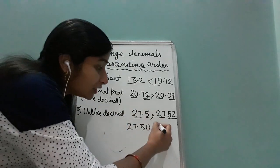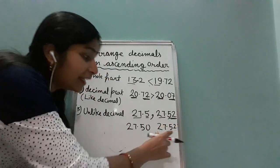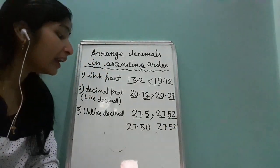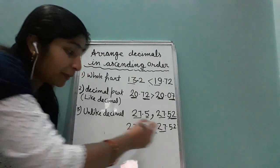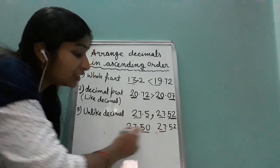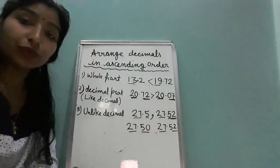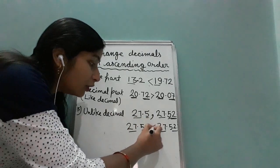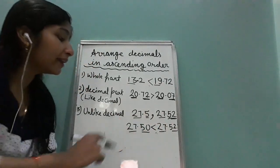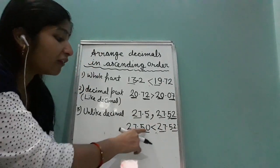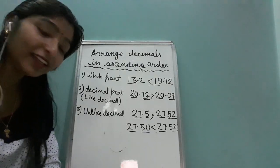This number already has two decimal places. Now the whole part is the same, so we move to the decimal part. This is 50 and this is 52. So 27.52 is greater than 27.50.